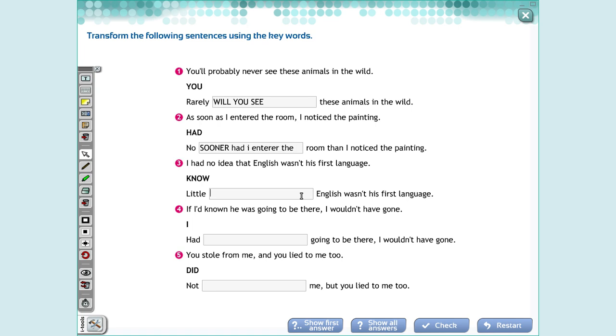I had no idea that English was his first language. So, I'm going to use little and my verb had no idea. I'm going to change had no idea to the verb know. My sentence is in the past. So, what is the auxiliary when we talk about past? Did. Who is my subject? I. And the verb? Know. Little did I know English wasn't his first language.